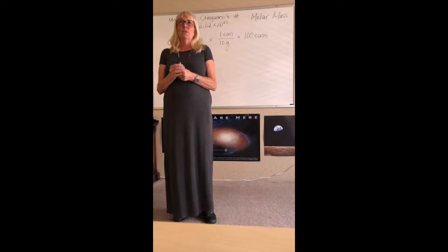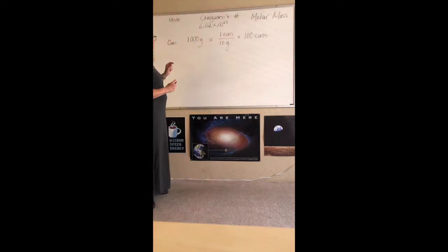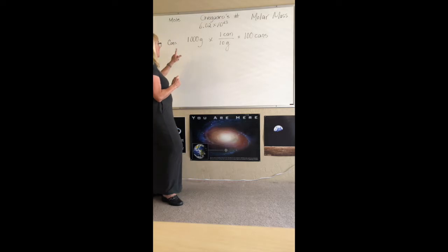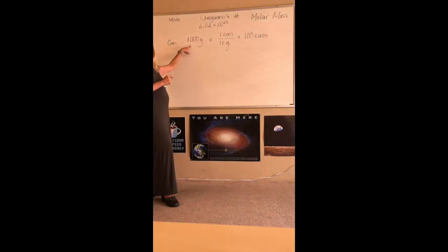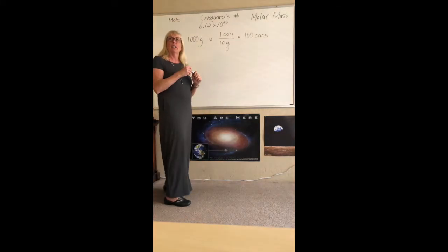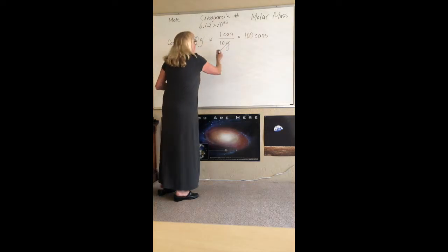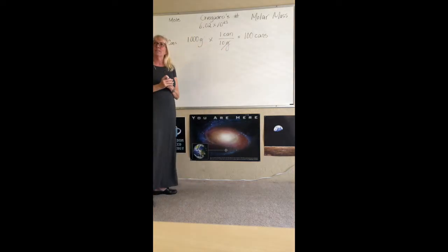If I take one can and it has a mass of 10 grams and I have a group of cans with a mass of a thousand grams, I'm gonna figure out there are a hundred cans. It's pretty simple but I just have to remember that I'm gonna cross out or cancel out and end up with a hundred cans.